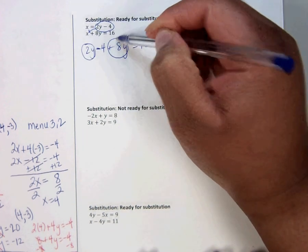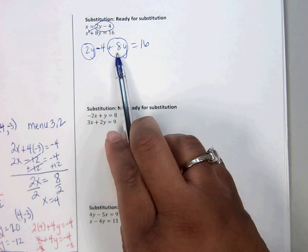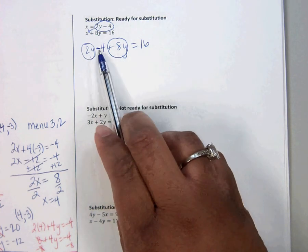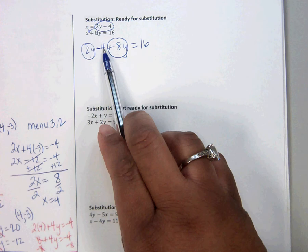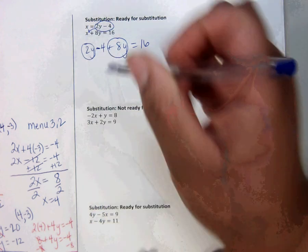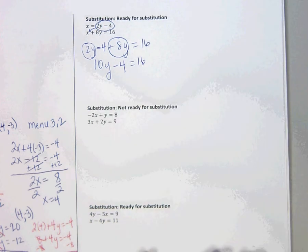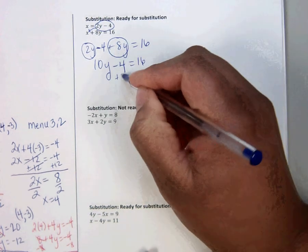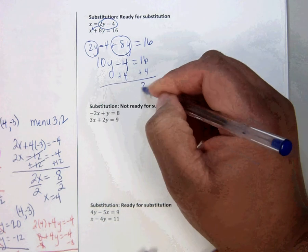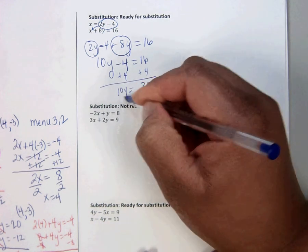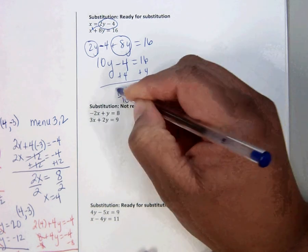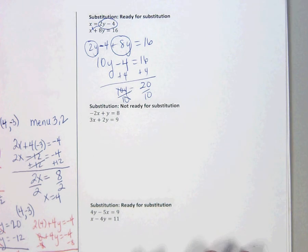2y and 8y are both positive. So this is 2y, not minus, because that goes with the 4. 2y plus 8 is 10y. Bring down the minus 4. Add 4 to both sides. Divide by 10. You get y is 2.